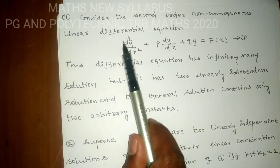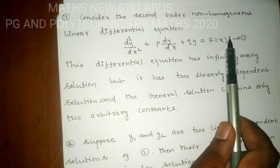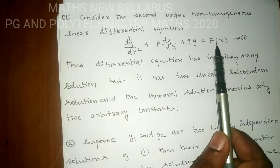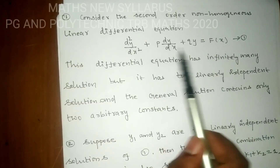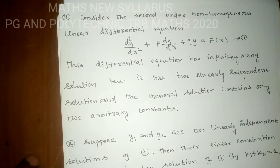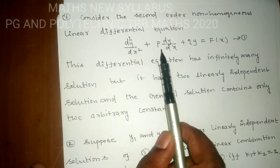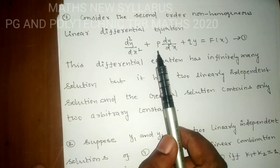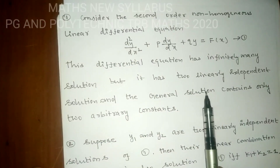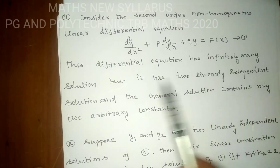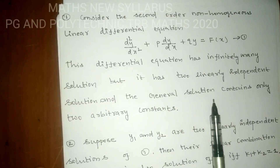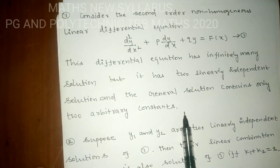This is the second-order non-homogeneous linear differential equation. If the right-hand side is zero, it is a homogeneous linear differential equation. For the non-homogeneous case, the equation has infinitely many solutions, but it has two linearly independent solutions, and the general solution must contain exactly two arbitrary constants.